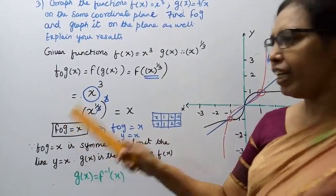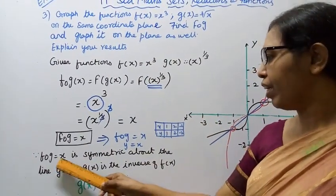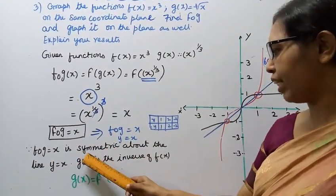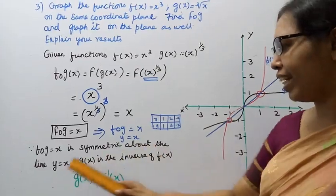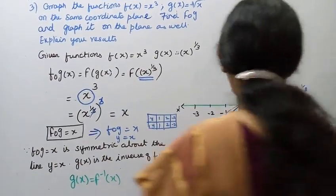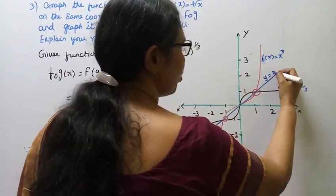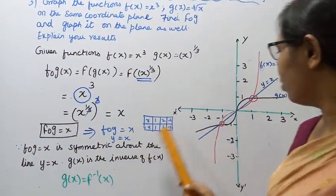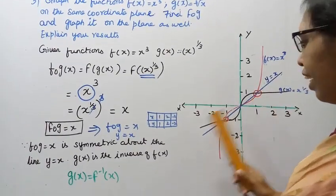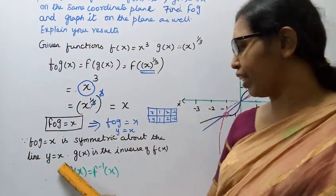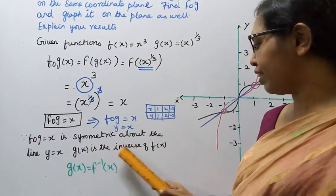It's a straight line. f∘g = x, or y = x, that is symmetric about the line y = x.